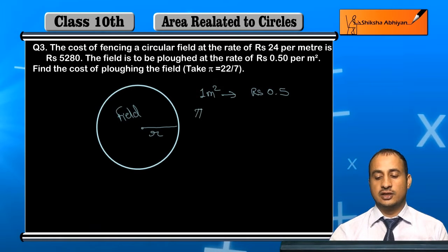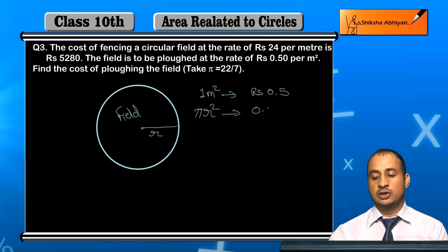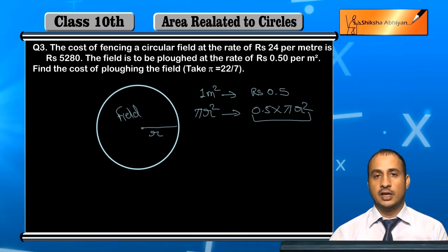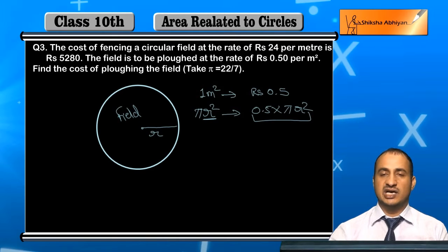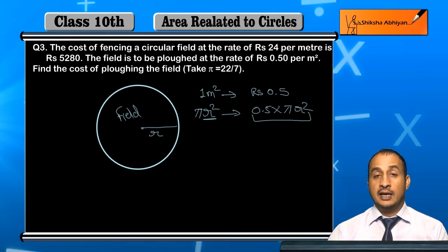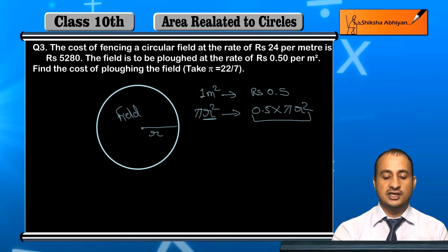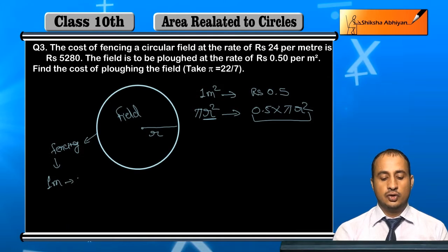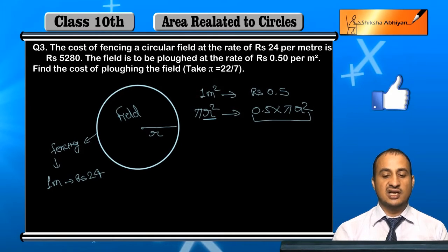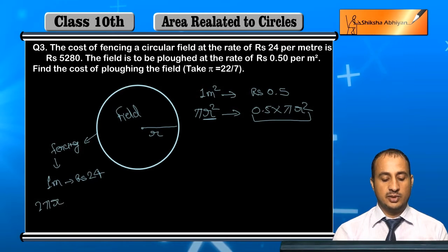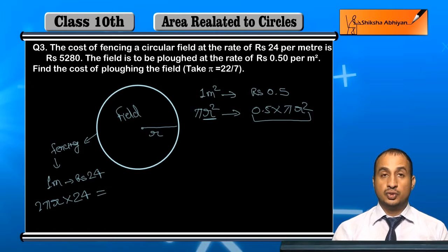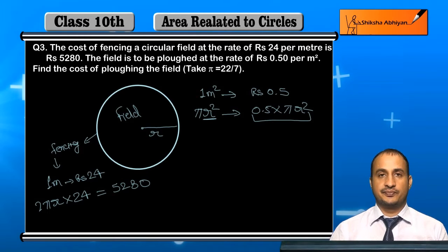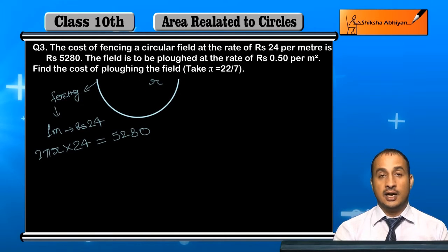The total cost is given as pi r squared. The rate per meter for fencing is Rs 24, so the total meters around the field — that is the circumference, equal to 2πr — is what gives us the total cost. Now students, let us solve this step by step.